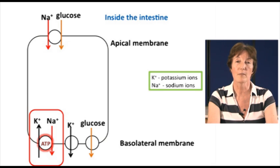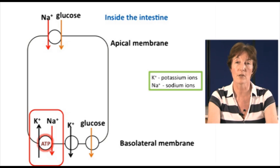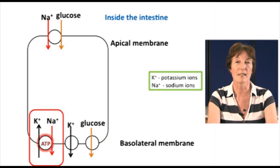This ensures that the sodium concentration inside the enterocyte cell is always low. So sodium is drawn into the cell across the apical membrane down a concentration gradient, and it brings the glucose in with it, as glucose is transported with the sodium ions. So as long as there is glucose and sodium ions present in the gut, these will be drawn into the enterocyte cell. The transport of glucose is described as secondary active transport — the glucose transporter does not require ATP itself, but absorption of glucose depends on energy being used to create the sodium ion gradient.